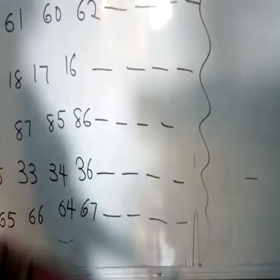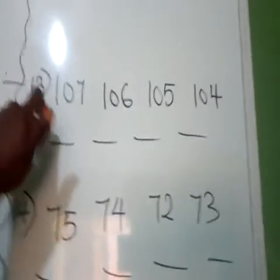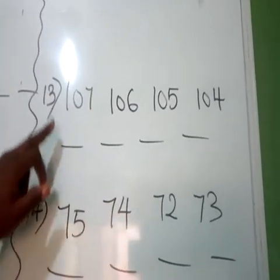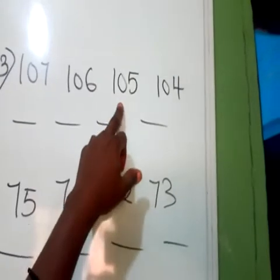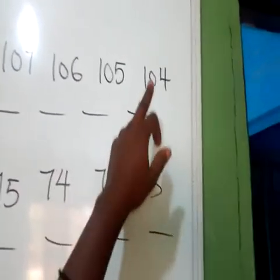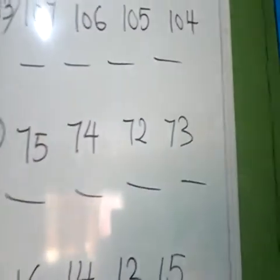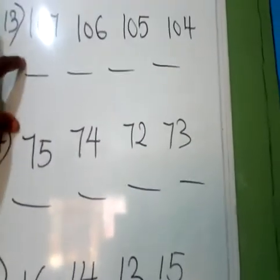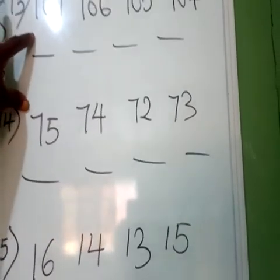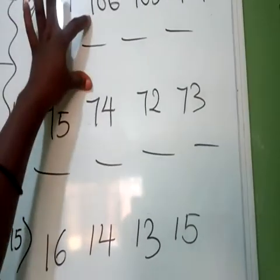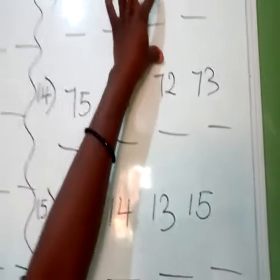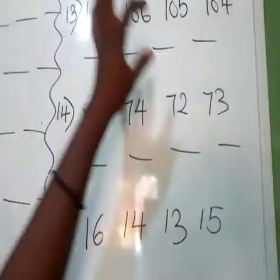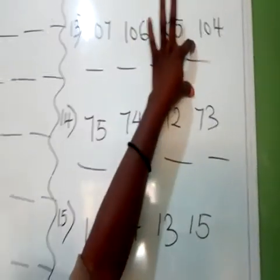Number 13: we have 107, 106, 105, and 104. Which one comes first? We have 104 as our first number, followed by 105, followed by 106, followed by 107.